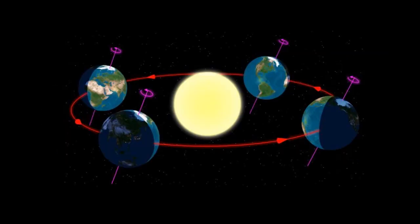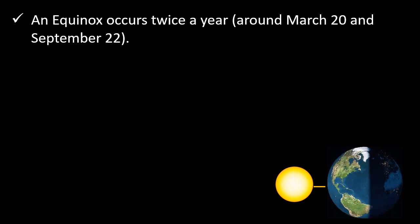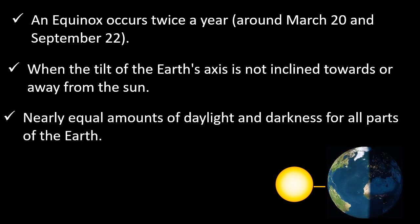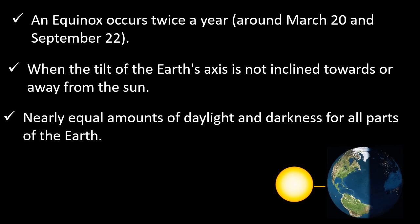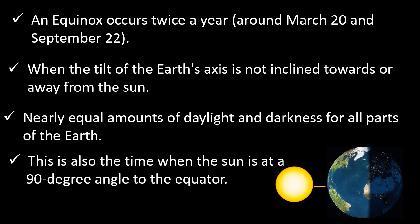Here is a short summary: an equinox occurs twice a year — around March 20th and September 22nd — when the tilt of the Earth's axis is not inclined towards or away from the sun, giving nearly equal amounts of daylight and darkness for all parts of the Earth. This is also the time when the sun is at a 90-degree angle to the equator.